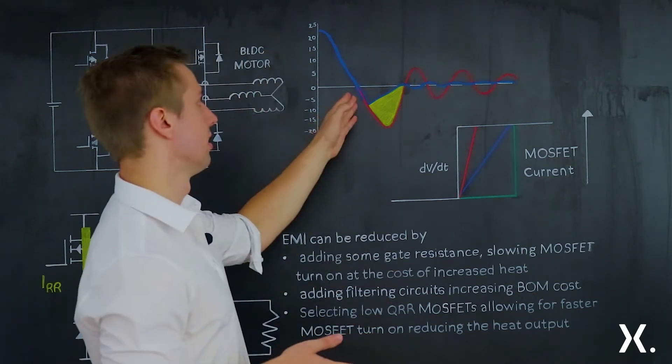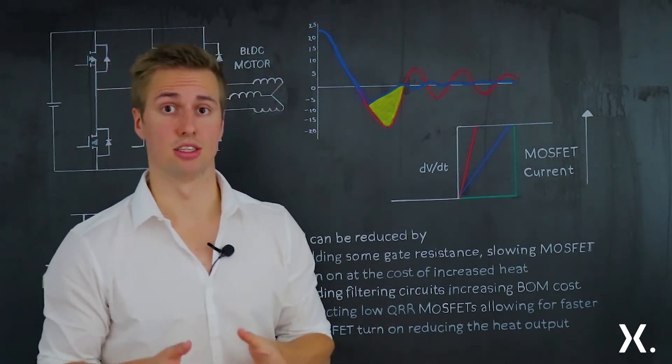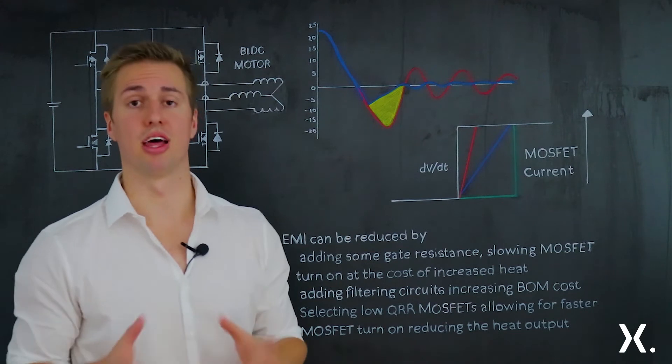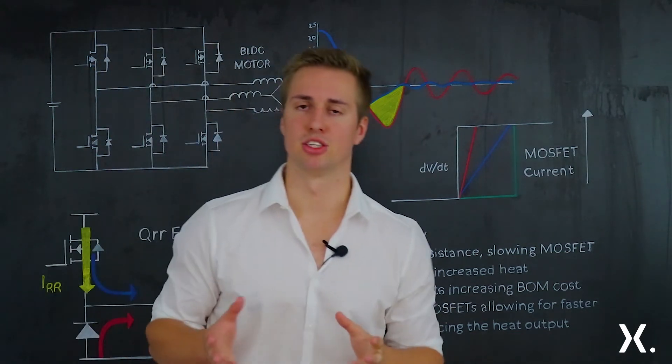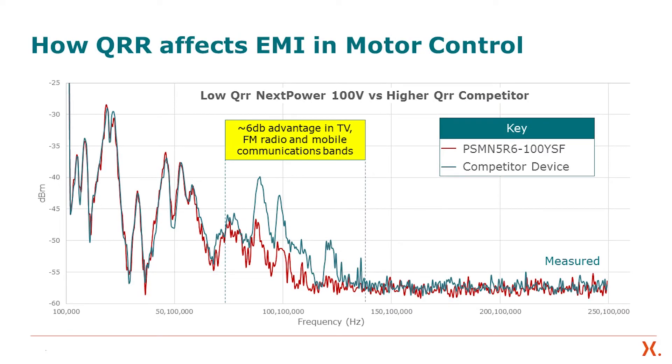What's interesting is that this ringing, if measured with a spectrum analyzer, you will actually show up there. So here's a picture of radiated emissions of a multi-drive circuit. This is with only one phase active, and is comparing a low QRR Nexperia device to a high QRR competitive device.